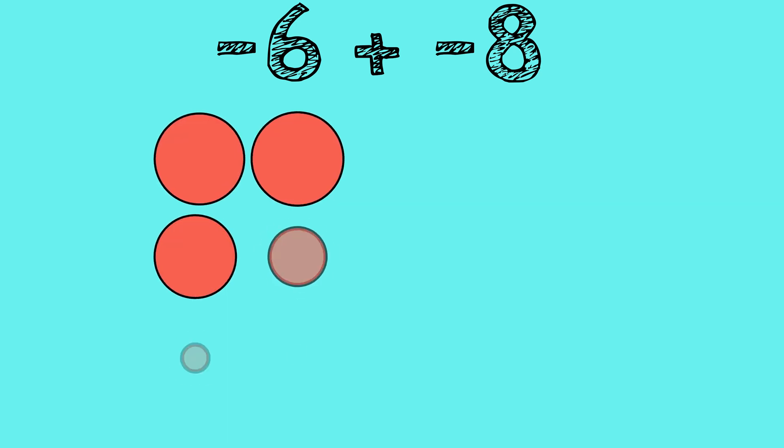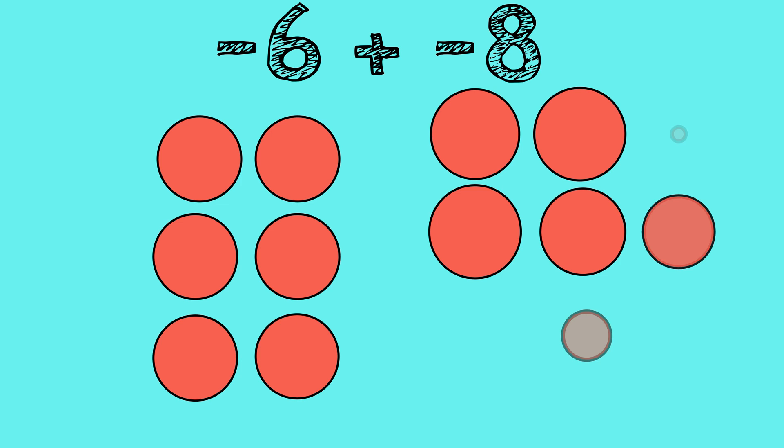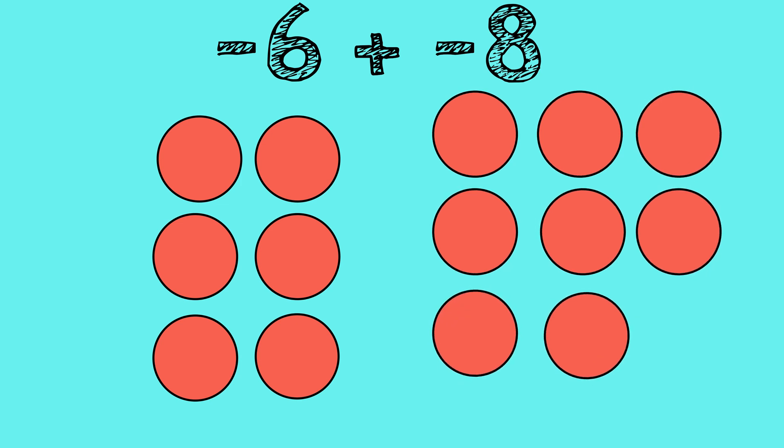For our last example, we will be adding negative 6 plus negative 8. We will be using 6 red counters and 8 red counters to represent both numbers. Since we do not have any yellow counters,